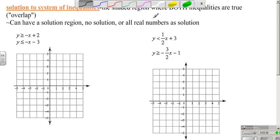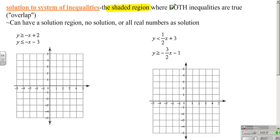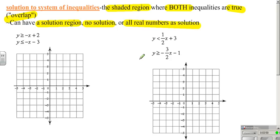Now, moving to solving inequalities, we're going to be talking about a shaded region where both of them are true. Any point picked in the shaded overlapping region — the overlap — will make them true. You can have one overlapping region, parallel lines with no overlapping shaded region, or you could end up covering the entire graph, which means all real numbers. We need to graph each inequality separately and then look for the overlapping area.